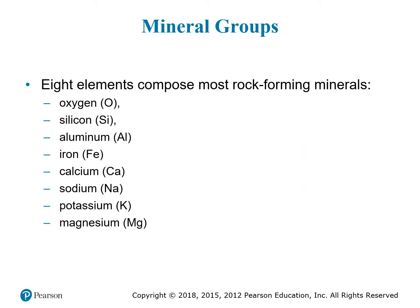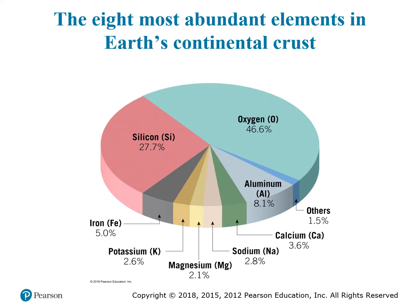There are eight major elemental players that make up the vast majority of minerals: oxygen, silicon, aluminum, iron, calcium, sodium, potassium, and magnesium. The crust is mostly oxygen and silicon, making up almost two-thirds of the entire crust. The crust ranges in thickness between 7 and 70 kilometers. Aluminum, calcium, sodium, magnesium, potassium, and iron make up most of the remainder, though only 1.5% consists of everything else — yet that small amount includes the vast majority of economically important minerals.